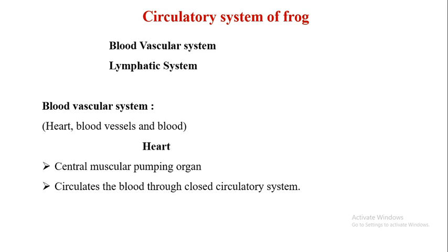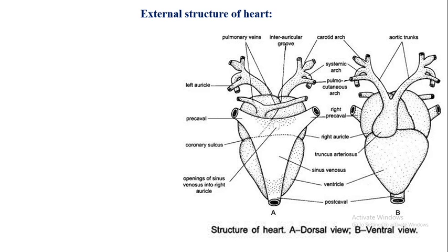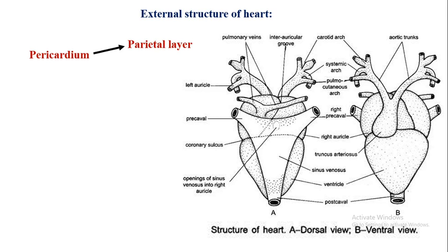The external structure of the heart: the heart appears to be a conical muscular structure lying in the mid-ventral line at the level of the lower forelimb. It is a reddish contractile structure enclosed in a double-walled thin bag-like structure known as the pericardium. The pericardium consists of two layers — the outer layer is called the parietal layer or parietal pericardium.